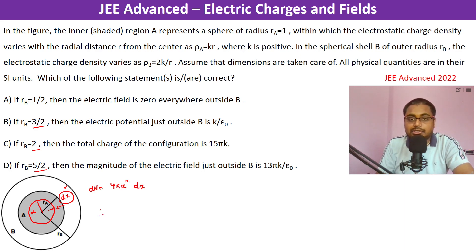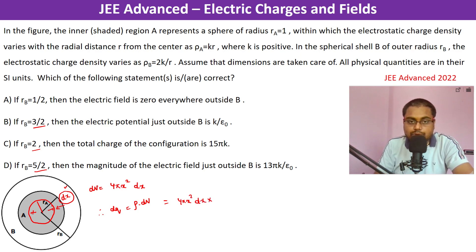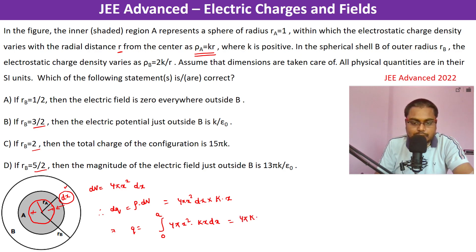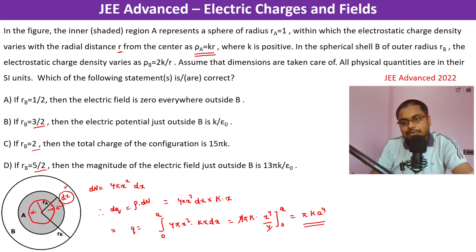The charge associated with this strip is dq = ρ · dV = 4πx² dx · k·x = 4πk·x³ dx. So the total charge in the inner sphere is Q_a = ∫₀ᵃ 4πk·x³ dx = 4πk · [x⁴/4]₀ᵃ = πk·a⁴.